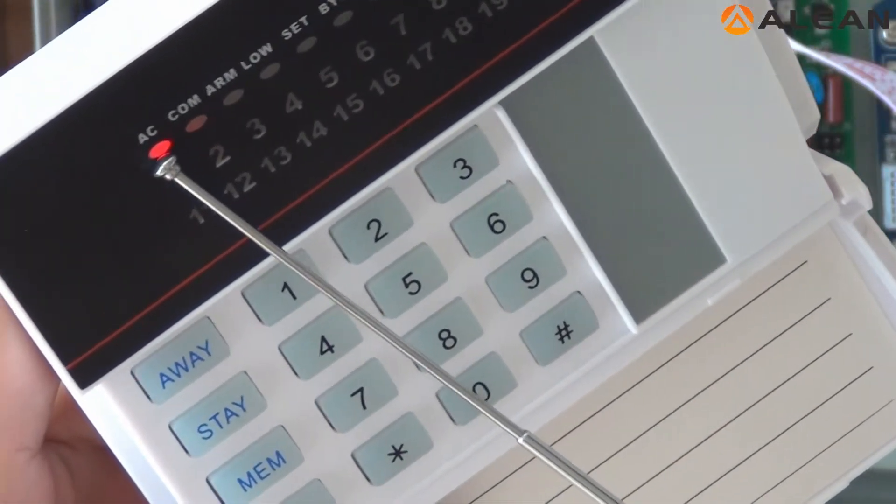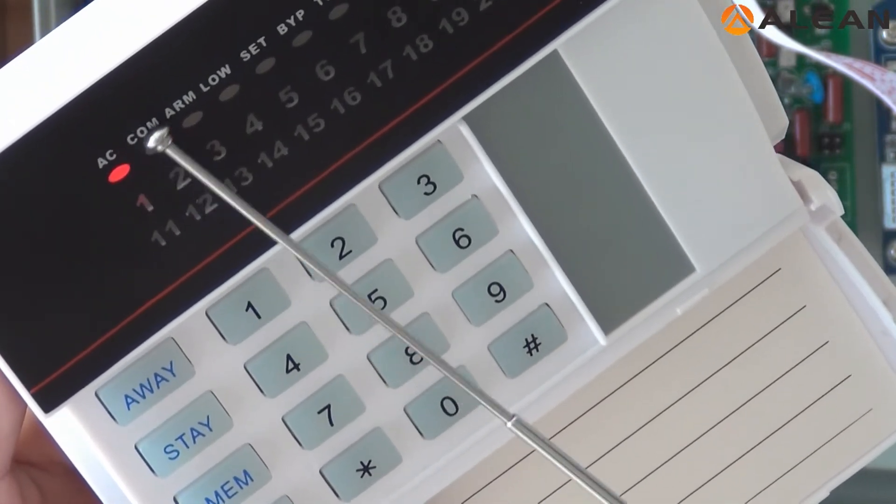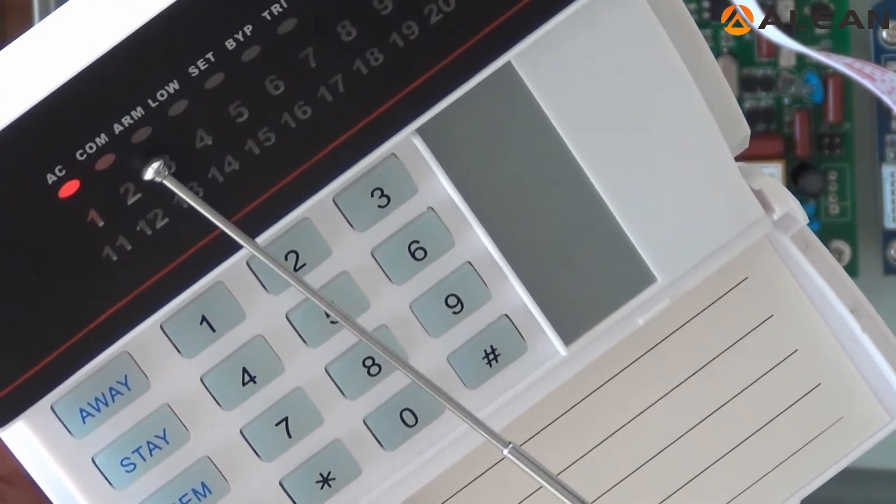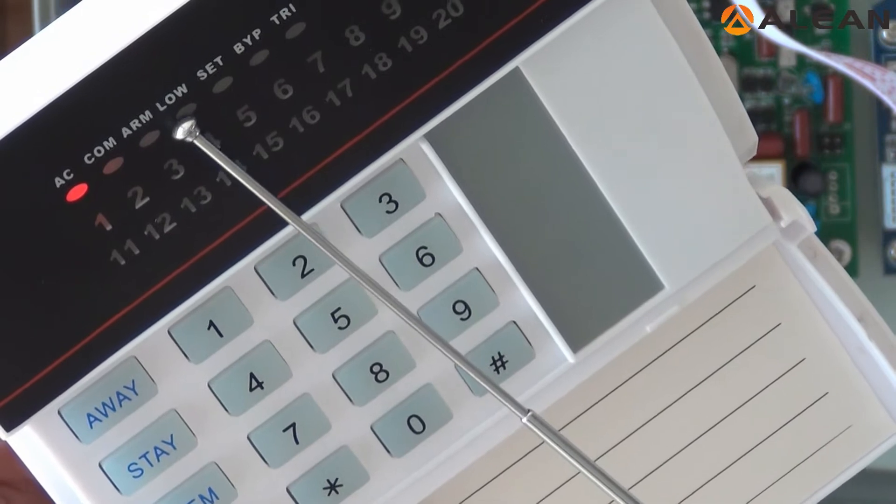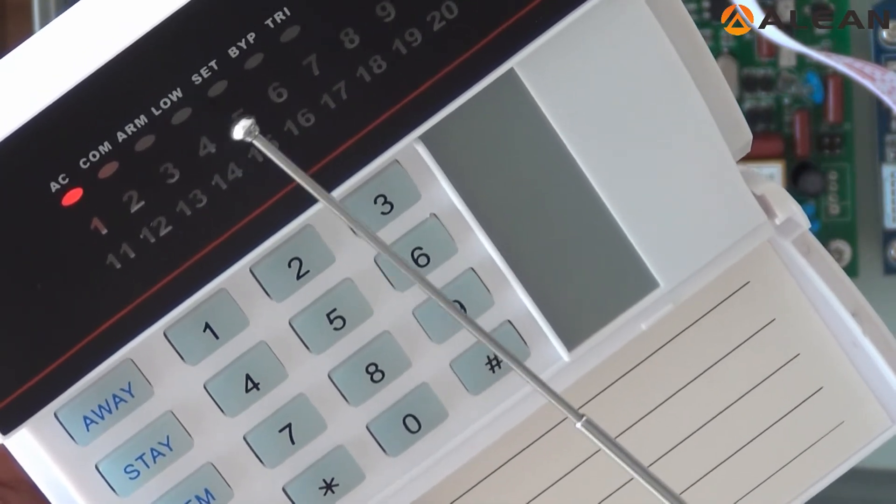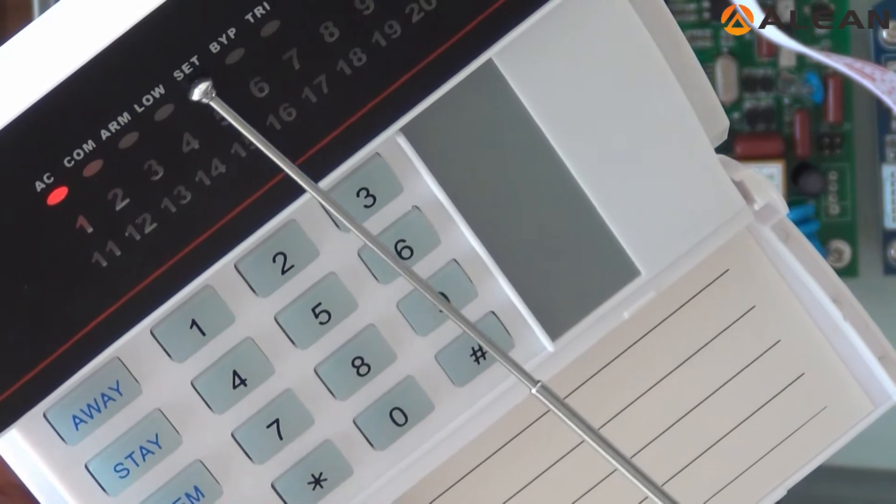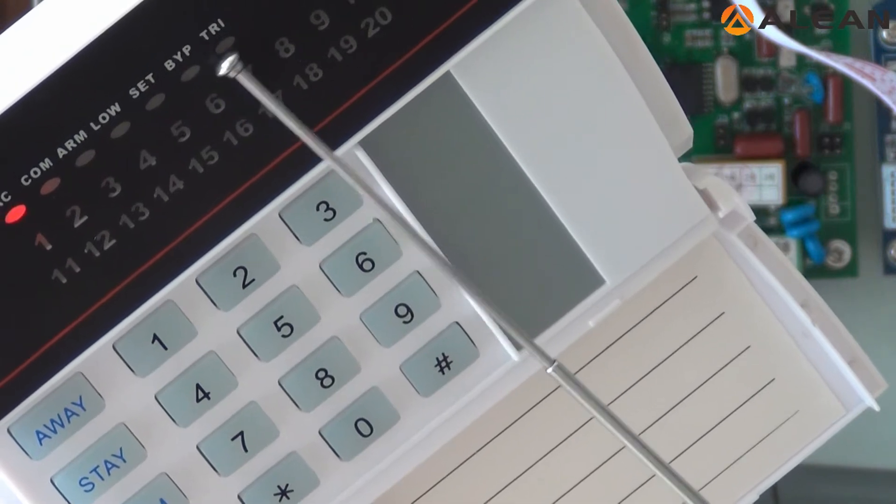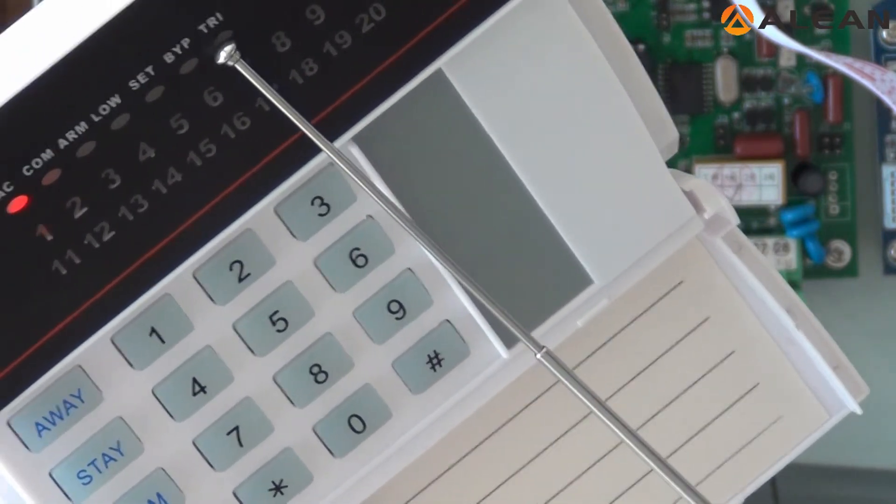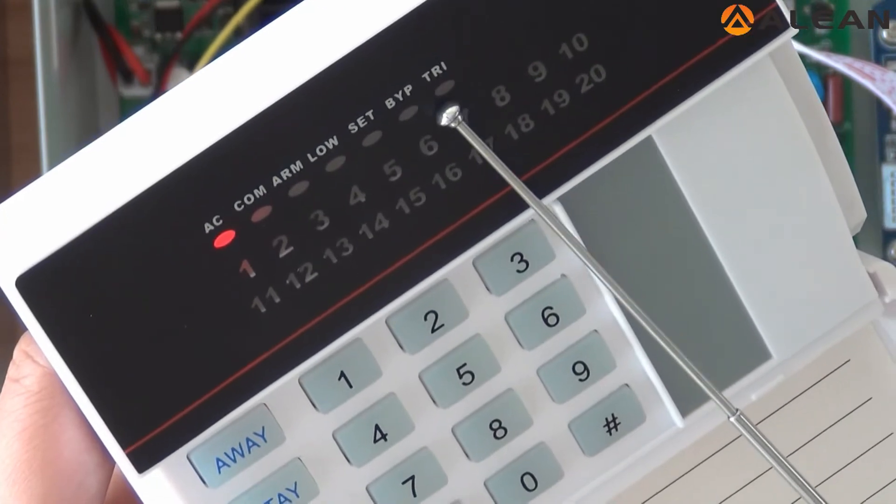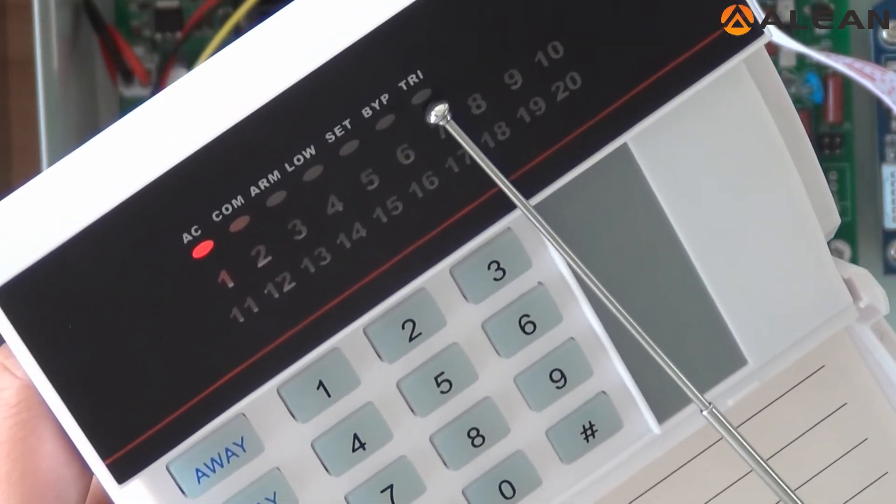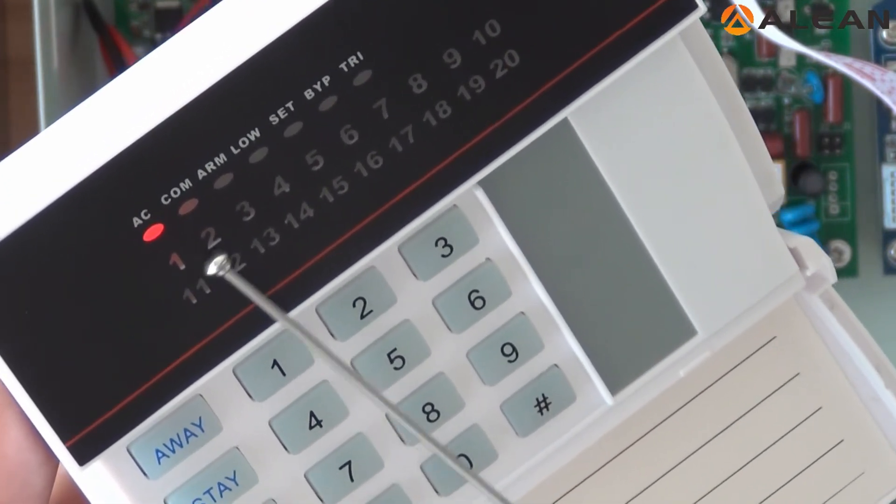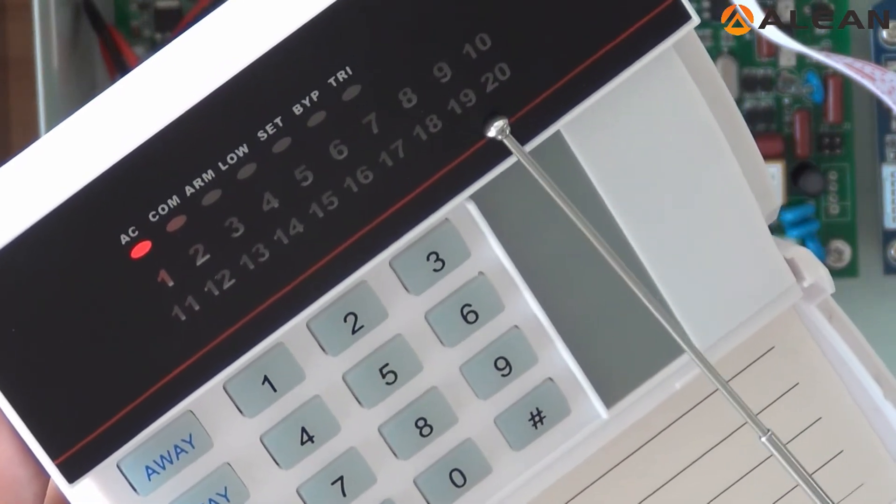The keypad, first indicator is for the AC, the power. COM for the communication. ARM means arm. LOW for the low voltage reminder. SET, it means you will go in the programming mode. BYP, bypass zoom. TRI is for the error code reminder. From 1 to the 20 is for the detecting zone display.